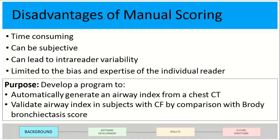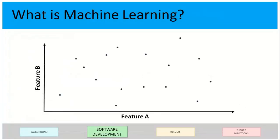The purpose of my project was to develop an automated program to generate automatic airway scores and then to validate that airway index with the Brody bronchiectasis scores in patients with CF. To create this program, I used machine learning.